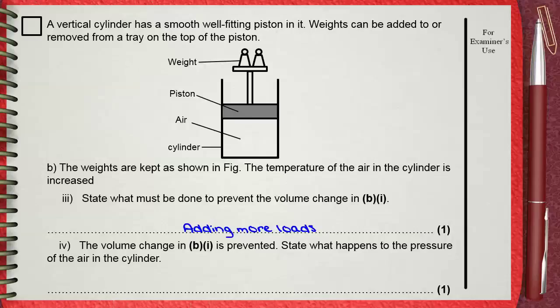Question 4. Now we prevented any change in the volume. State what happened to the pressure of the air in the cylinder. The temperature increased. But the volume is unchanged. In this case, and only in this case, we can say that the pressure will increase. Because now the volume is constant.